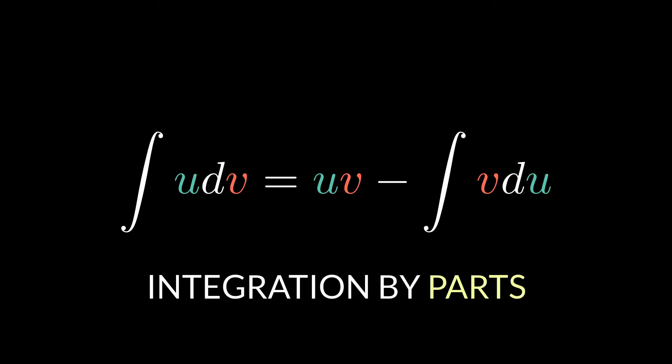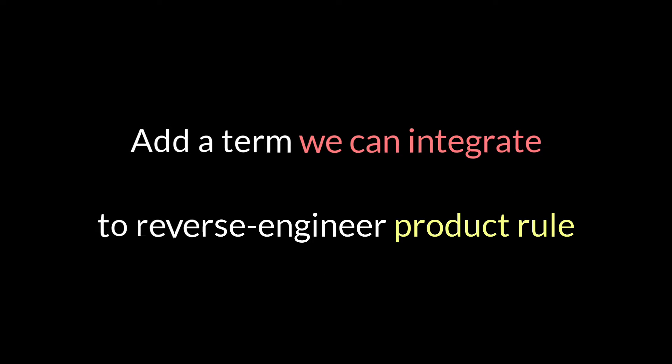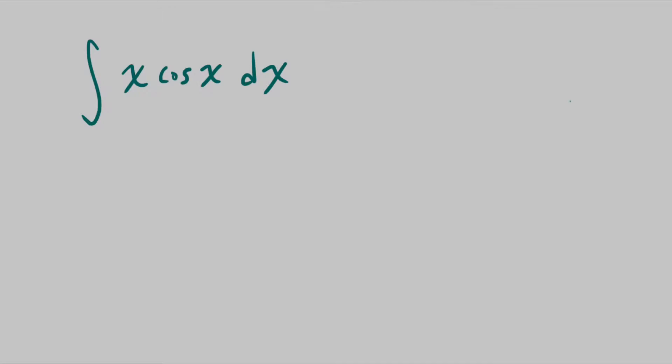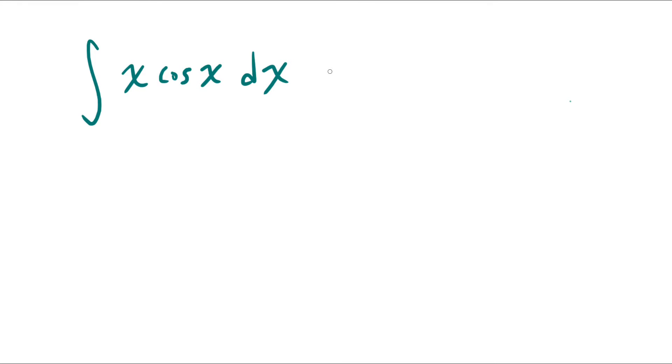Integration by parts is a technique in which we add a term we can integrate to reverse engineer product rule. To take an example, say we want to integrate x times cosine of x.